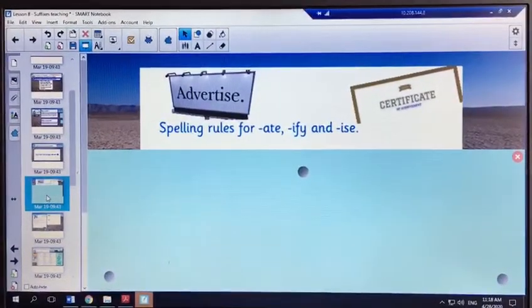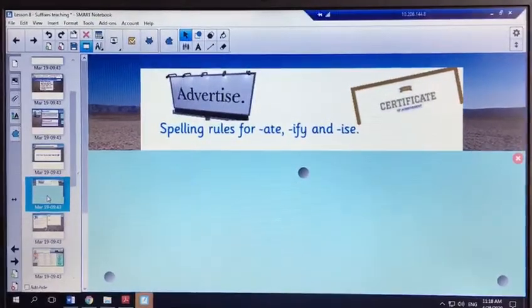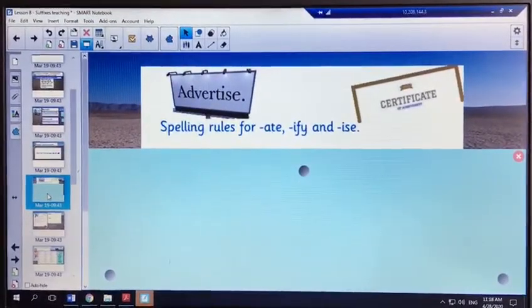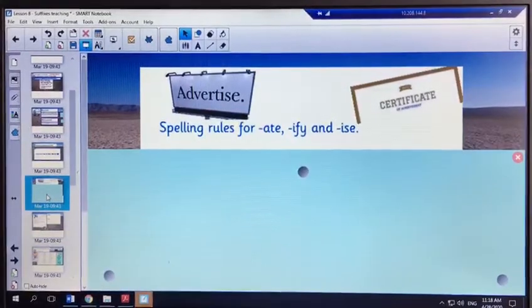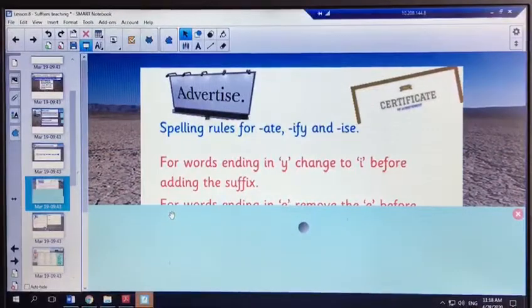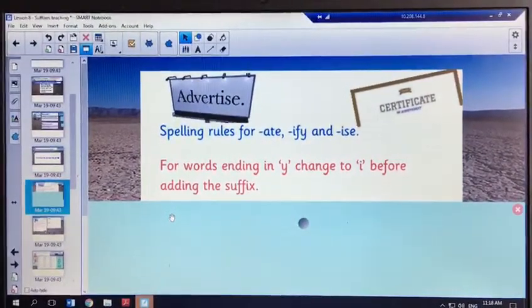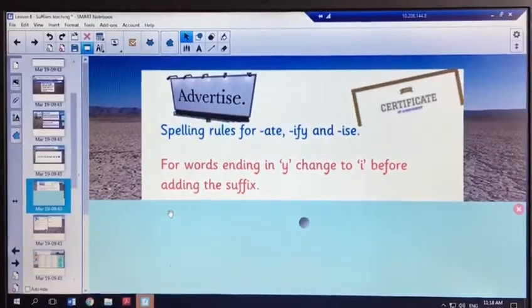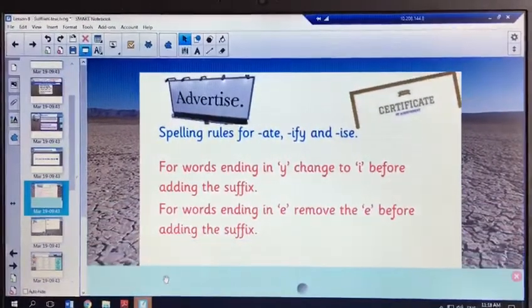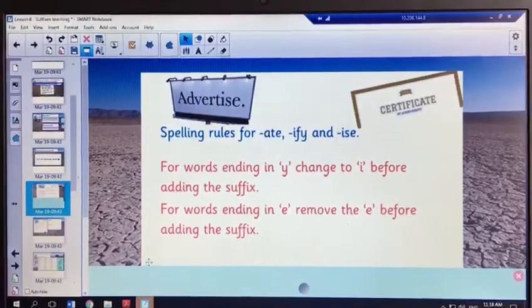So before we move on to our first task I'm just going to introduce some rules, some spelling rules when we add these suffixes onto root words. So to begin, for words ending in y you need to change it to i before adding the suffix. And our next rule, for words ending in e you need to remove the e before adding the suffix.